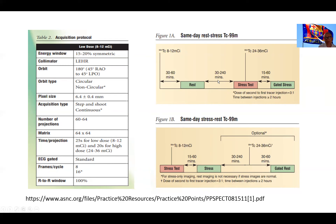The most commonly used protocol is the technetium-99m sestamibi or tetrofosmin protocol: inject the patient, wait 30 to 60 minutes, do the rest scan, allow some delay, then stress the patient, inject at peak stress, delay 15 to 60 minutes to clear GI activity, and then image. The patient can be in the lab for about two to three hours door to door.